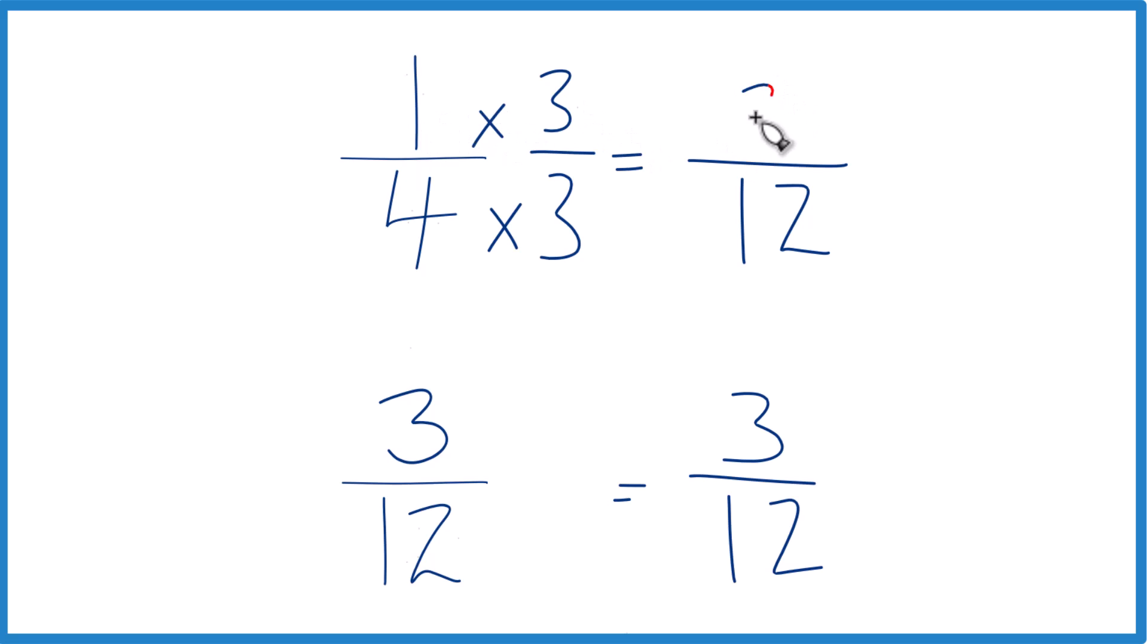One times three is three, and you can see these here, they're the same. So one-fourth and three-twelfths, they're equal. Neither one is greater than or less than. That's it.